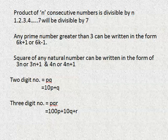of numbers from 1 to 7 will be divisible by 7. Any prime number which is greater than 3 can be written in the form 6k plus 1 or 6k minus 1. For example, 5